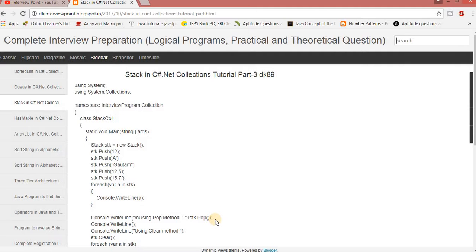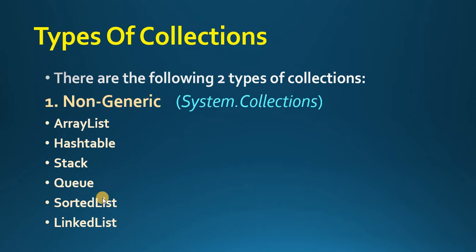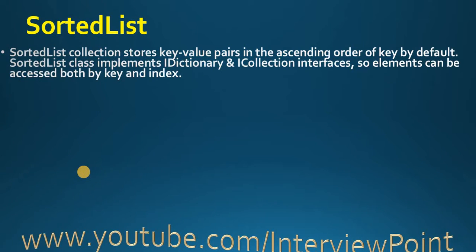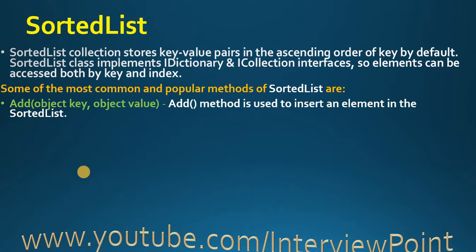In this video I am going to talk about Sorted List in C# Flexi. So what is Sorted List? Sorted List collections store key-value pairs in the ascending order of the key by default. The Sorted List class implements the IDictionary and ICollection interfaces. Elements can be accessed both by key and by index.